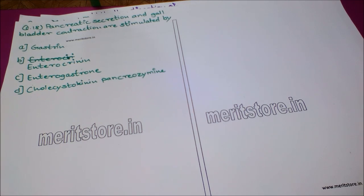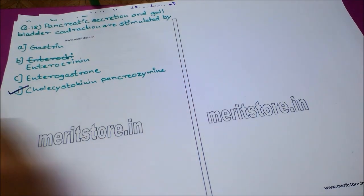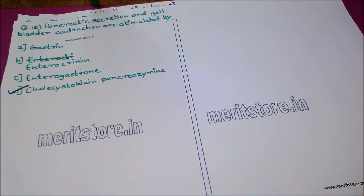The next question: pancreatic secretions and gallbladder contractions are stimulated by — option A: gastrin, option B: enterocrinin, option C: enterogastrone, option D: cholecystokinin-pancreozymin (CCK-PZ). The correct answer is option D, cholecystokinin-pancreozymin, a hormone secreted by the epithelium of the entire small intestine.